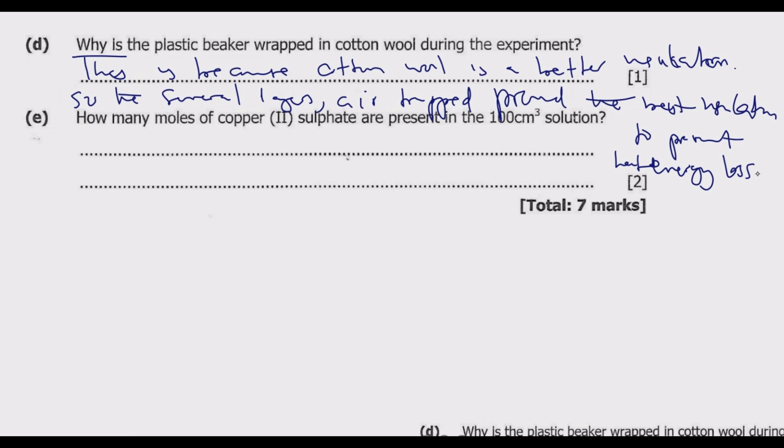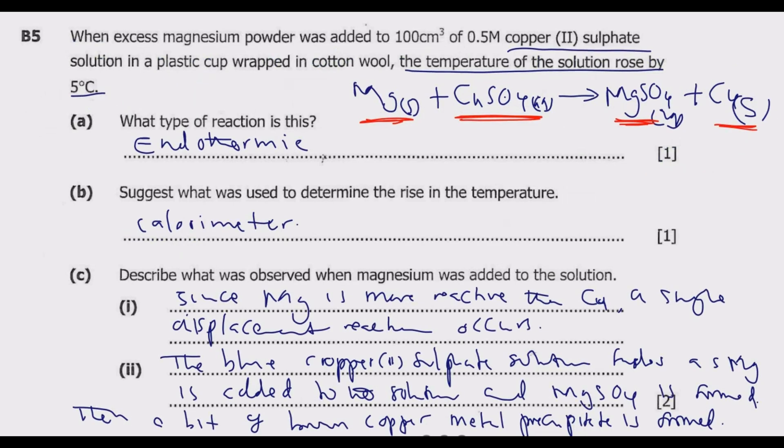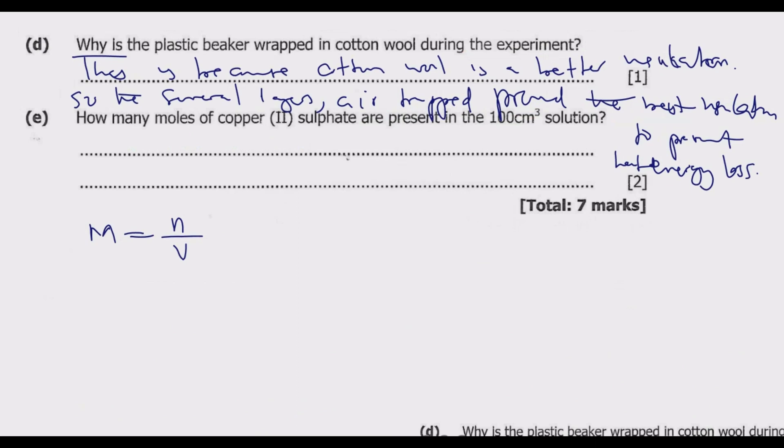Question E: How many moles of copper sulfate are present in the 100 cm³ solution? We know that molarity is given by the number of moles divided by volume, where the volume should be in dm³. We've been given molarity and volume, so we can easily find the number of moles. M = 0.5, and V = 100 cm³. We convert this to dm³ by dividing by 1000 cm³, because in 1 dm³ we have 1000 cm³. We get 0.1 dm³.